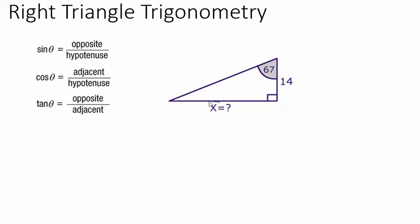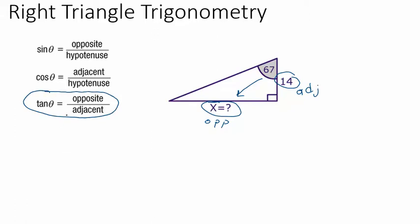We need to figure out which formula to use based on what sides we have and want. The unknown side is adjacent to the 67-degree angle; the side of 14 is opposite. The long side is the hypotenuse — we don't know it and don't need it. So we need the formula that uses opposite and adjacent, which is tangent. We write: tangent of 67 equals x (opposite) divided by 14 (adjacent).